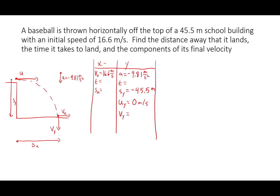Now we just need to solve. We can't do the x direction yet because we only have one given, but we can do the y direction. I'm going to solve for vy. I need the equation that has a, s, u, and v — that's v squared equals u squared plus 2as, in the y direction. Solving for v, I get v equals the square root of u squared plus 2as. Plugging in numbers: v equals the square root of 0 squared plus 2 times negative 9.81 times negative 45.5.